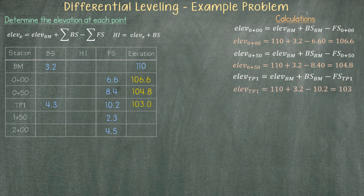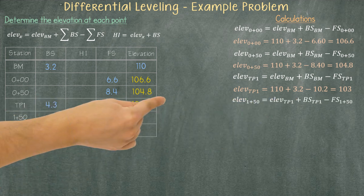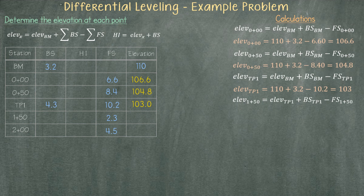The next station is one plus 50, and the elevation is equal to the elevation at the turning point plus the back sight at the turning point minus the fore sight at station one plus 50. The next and final station is two plus zero zero.